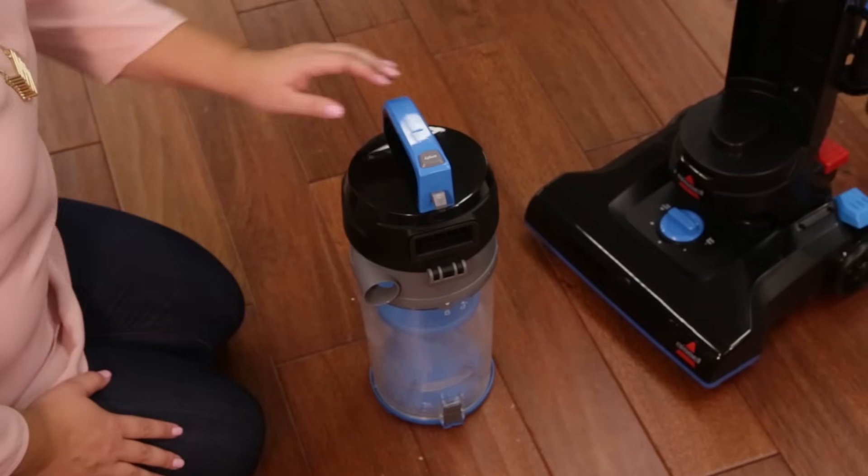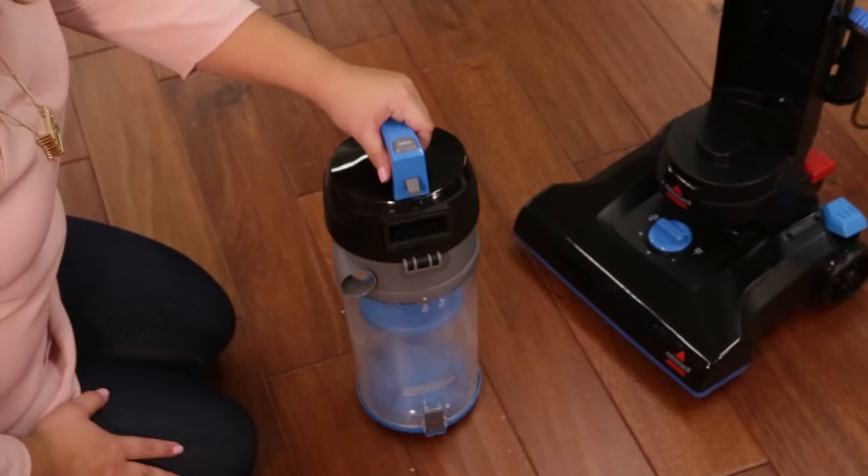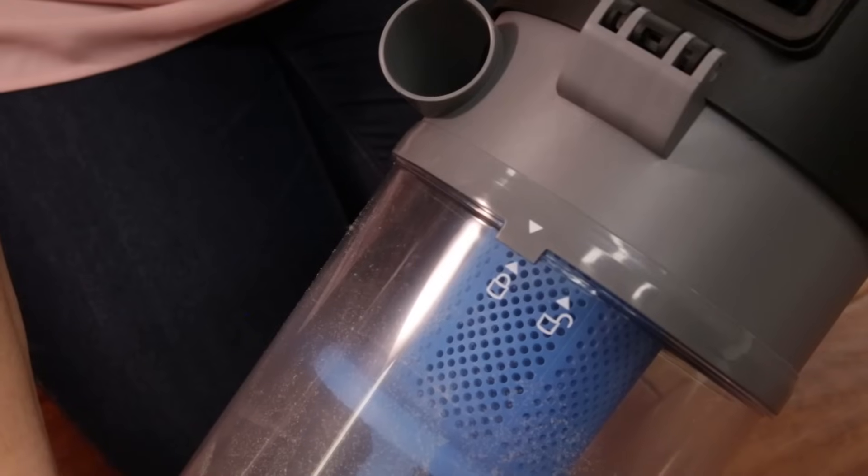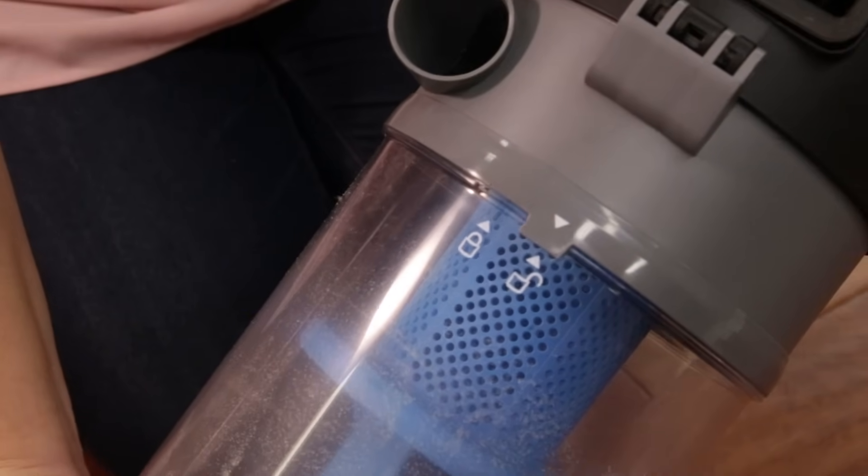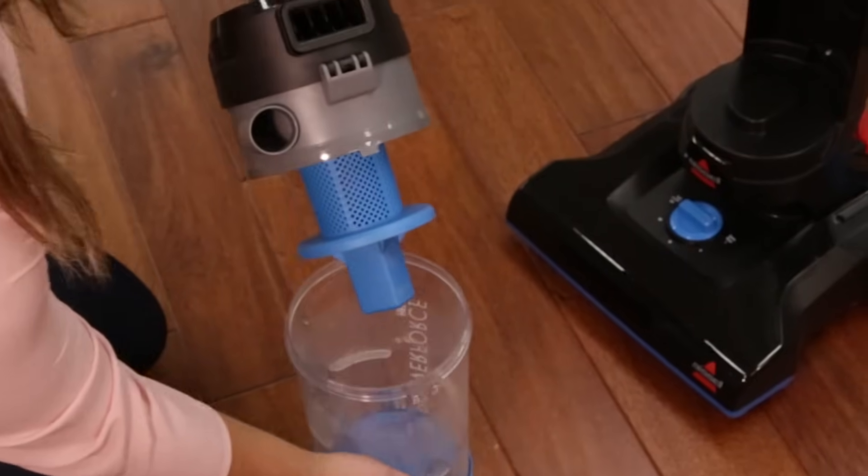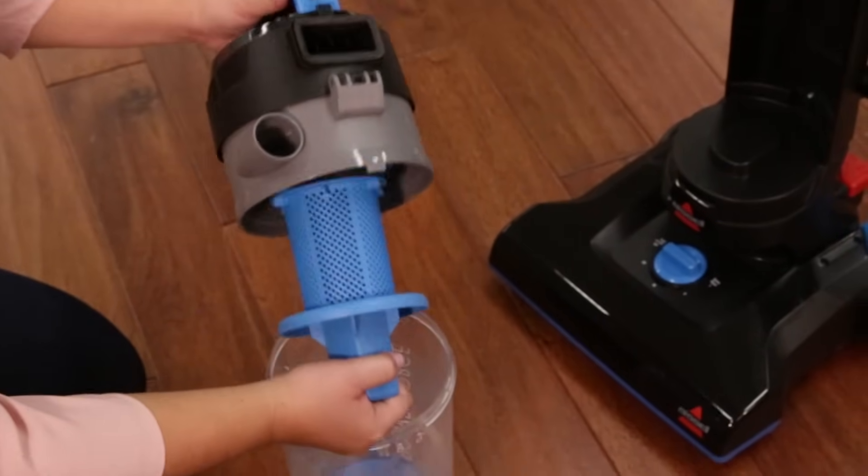To clean your separator, the dirt container must be removed. Remove the separator by twisting to the left and removing. Rinse and dry all sections of the dirt container with paper towel.